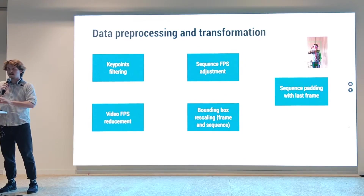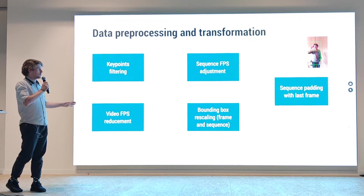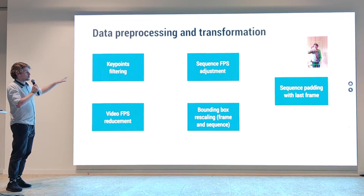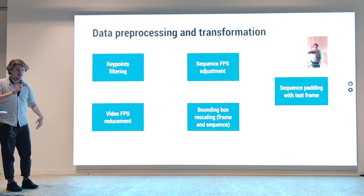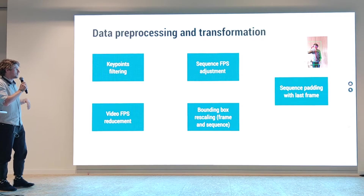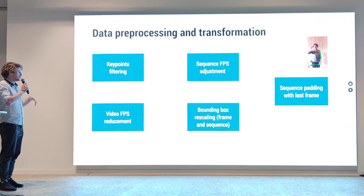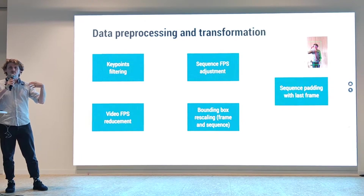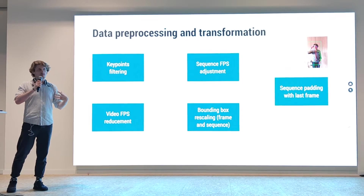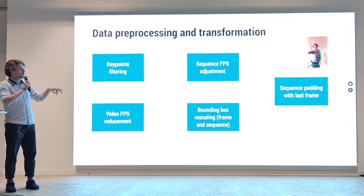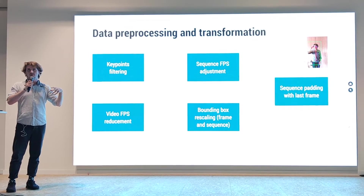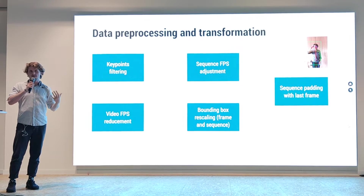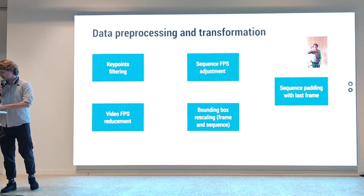For the data processing: we have some key point filtering — ignoring key points that are not relevant to my body, like certain background points. We have FPS resampling for sequences: we use FPS adjustments so shorter sequences use a higher FPS and longer ones use a lower FPS. We have bounding boxes for scale to actually ignore the background so we only track the relevant body space — the space we are moving within when we sign.